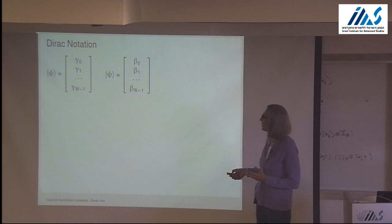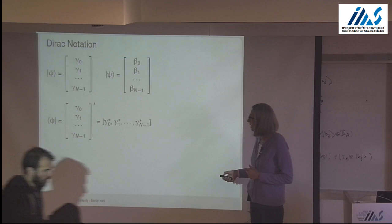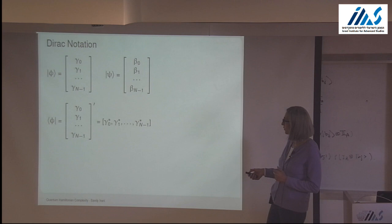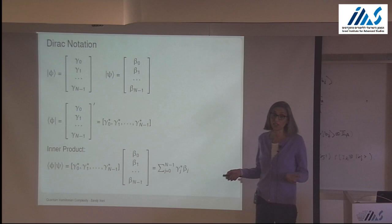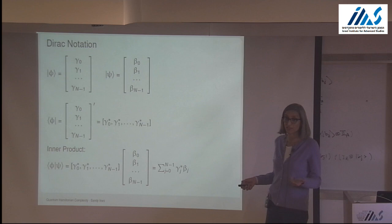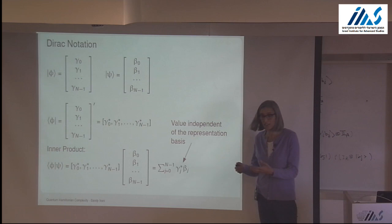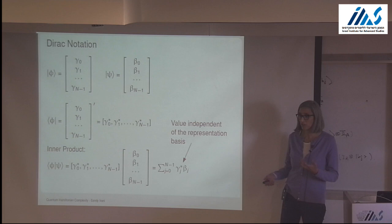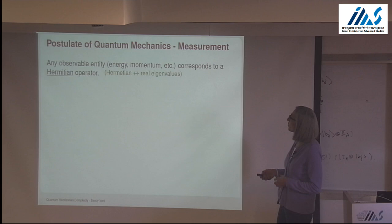A quick review of Dirac notation. Given two states, I can take the bra version of the ket, which is just the adjoint — the transpose conjugate — giving a row vector. The inner product is just matrix multiplication: I multiply this row by this column and get a scalar out. The nice thing about Dirac notation is that the inner product is independent of the particular basis we chose.